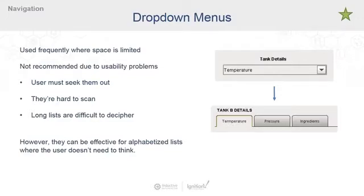Now we have drop-down menus, and we see these used really often with Ignition projects. That's probably because space is really limited in our HMIs and it's a limited commodity. These actually suffer from a lot of usability problems, so we really don't recommend them for use. The problems are that a user must seek them out, and they're really difficult to scan because you have to click into them to understand what the options are in the list.